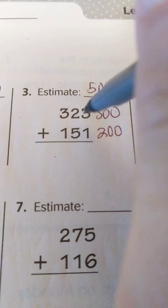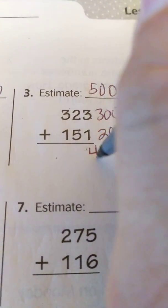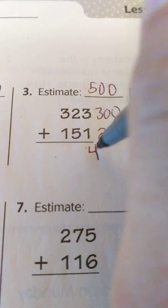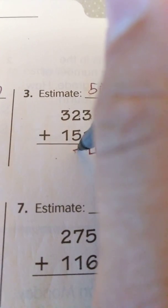Then I'm just going to add down, so 3 plus 1 equals 4. I don't need to regroup because the number is less than 10. 2 plus 5 is 7, the same applies to the tens, we do not need to regroup.